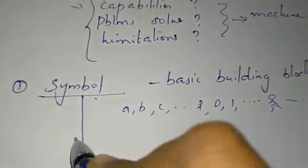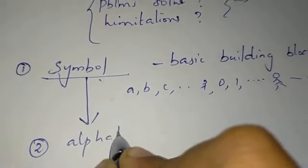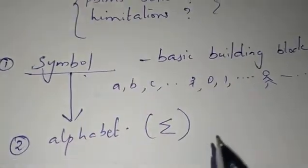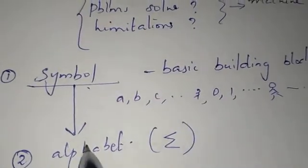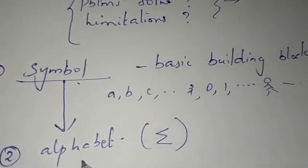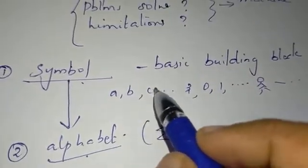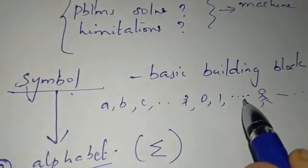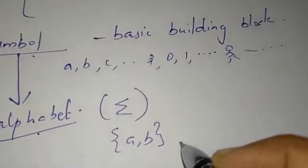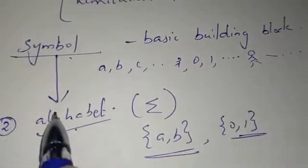In this symbol, we have an alphabet. An alphabet is a collection of symbols — a group of symbols. So symbols are called A, B, C, Z, 0, 1. An alphabet is a group of symbols.